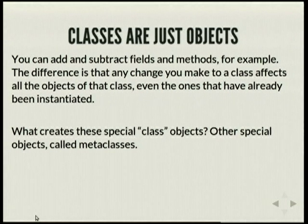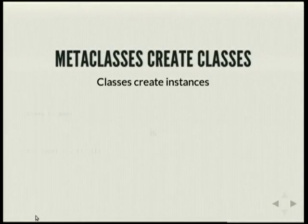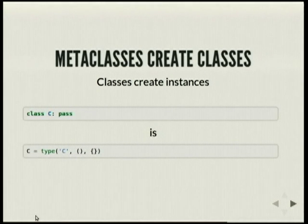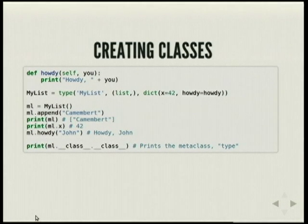What creates these special class objects? Like classes create instances, but what creates classes? These are some special objects called metaclasses. The default metaclass is something called type. So class C: pass is similar to calling type('C', (), {}). You can dynamically create classes by calling type with the name of the class, give it a base class of list, and a dictionary with an attribute of 42 and a function howdy.